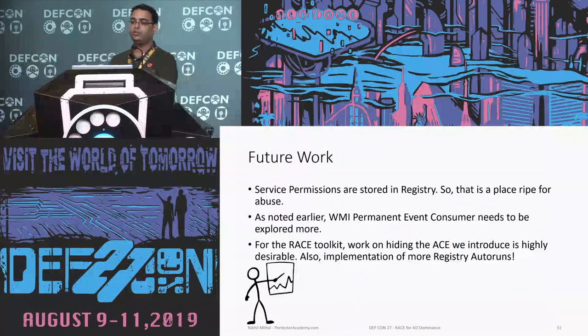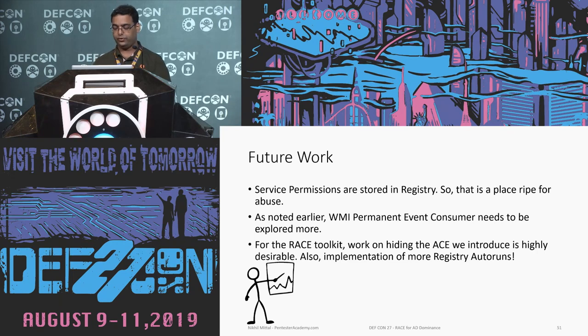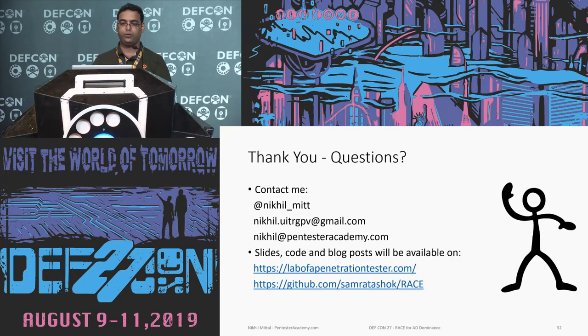For future work: when you change service permissions, those are stored in the Windows registry — that would be an interesting area to discover. WMI permanent event consumers — I wasn't really successful there, but that may be an interesting point. For the RACE toolkit specifically, I haven't worked on hiding the ACEs once you've modified the ACL — that would also be really interesting. That would be all. Please fire your questions now, or you can contact me on Twitter or on my email. Thank you.